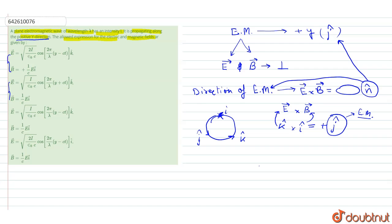We are having option A and option B with E as k cap and i cap for magnetic field and k cap for electric field in both the cases.